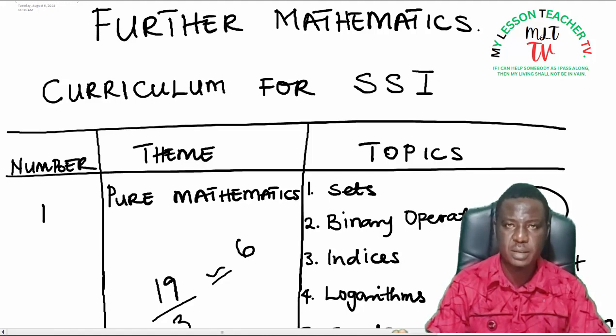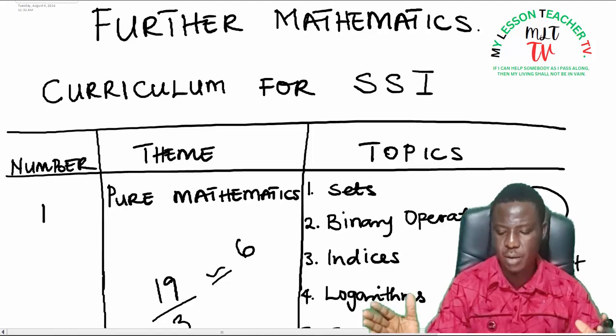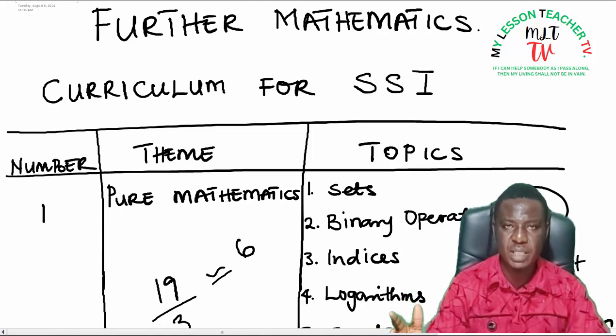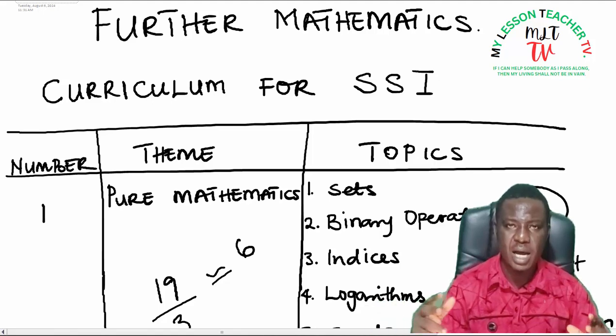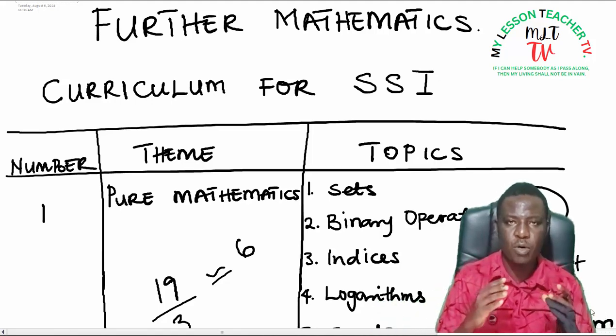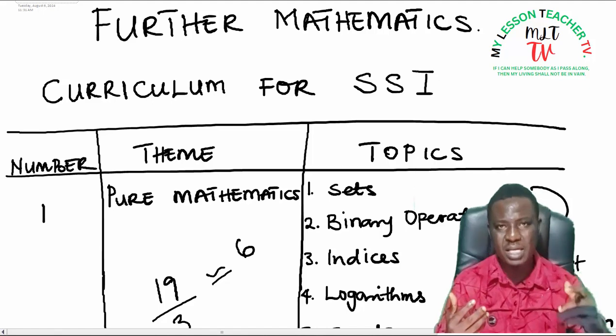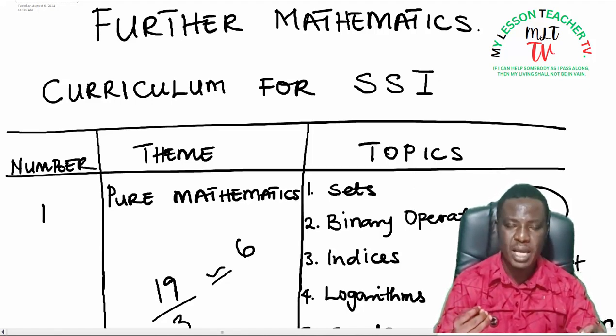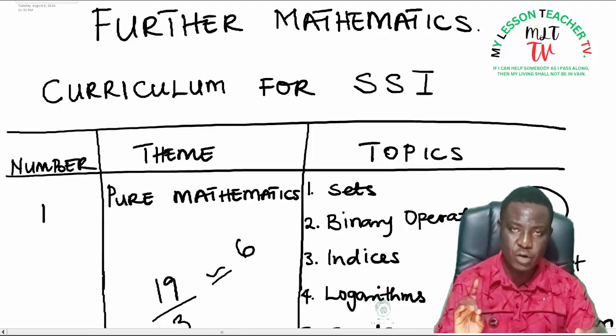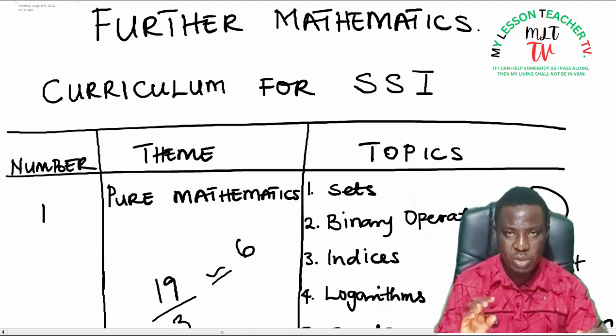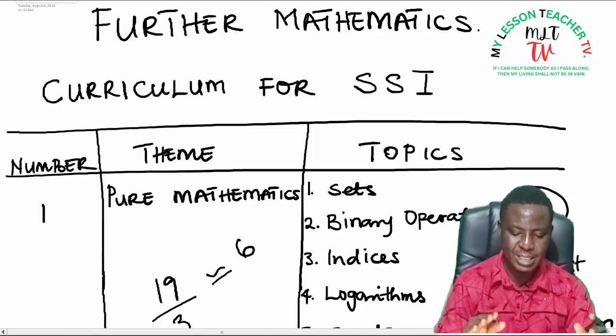Good day and welcome to today's class. Today's class is a continuation of our previous class on SS1 Further Mathematics. At the last class I explained to you the curriculum of SS1, which is a collection of all the topics required of you as a learner to learn. I gave you a rundown of all the topics and thereafter we broke it down into terms, whereby it is expected that you learn approximately six broad topics in each of the terms. We shall take them sequentially beginning with the theme pure mathematics, and the first topic under pure mathematics is set.